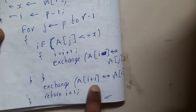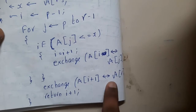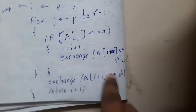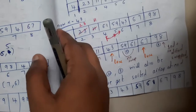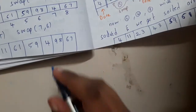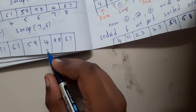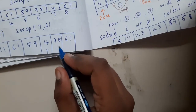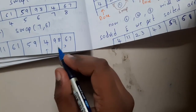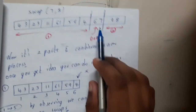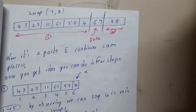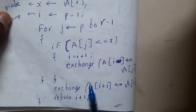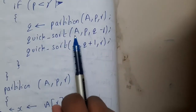Based on that condition you are incrementing the value of i and swapping it with the j-th element. Once this operation is done, at the end you will be exchanging the i plus one element with r. The i value will be here, so i plus one with r — these two will be swapping. At the end you will be returning i plus one.